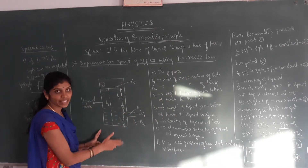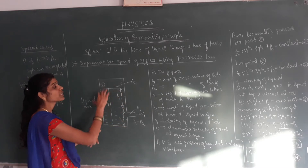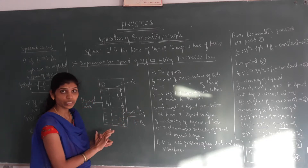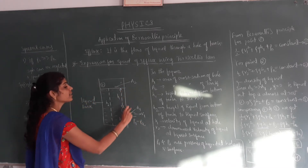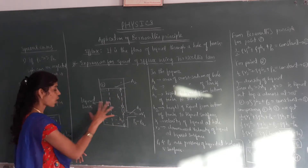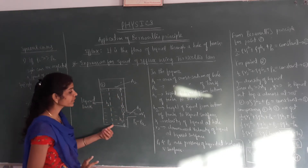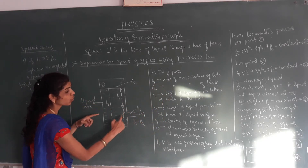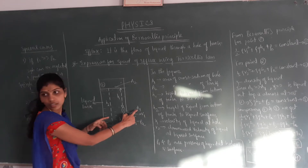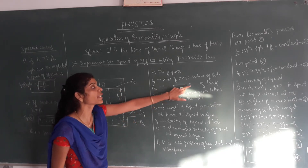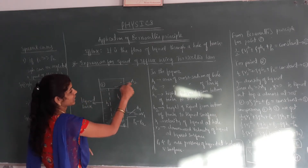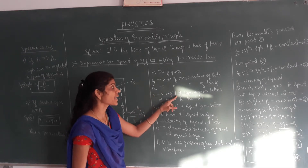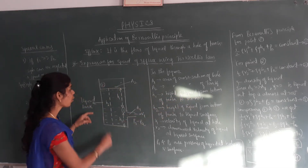This is the diagram we are using. We are considering a tank filled with water, and at the side of the tank there is a small hole — that we are going to call efflux. In this diagram, A1 is the area of cross-section of the hole, and A2 is the area of cross-section of the tank. This is the empty space above. H1 is the height of the liquid from the bottom of the tank to the hole.